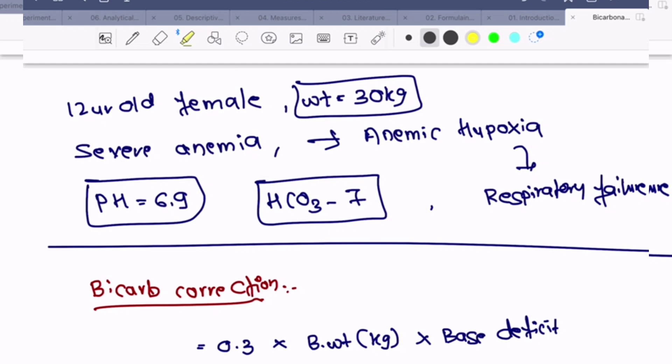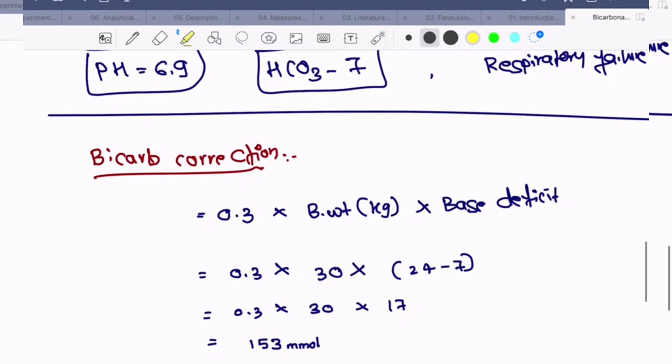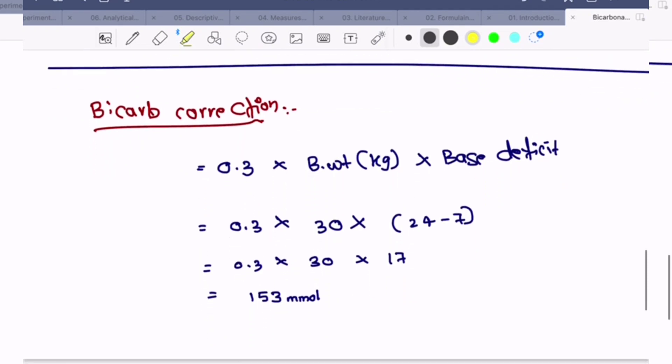The child was intubated and put on mechanical ventilation. ABG was done - it showed pH of 6.9 and HCO3 of 7. The patient was planned for bicarb correction.